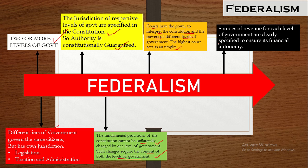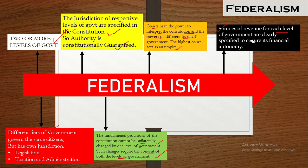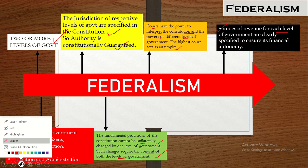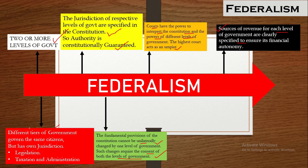Moving to a very important point: the sources of revenue for each level of government are clearly specified to ensure their financial autonomy. No government can stop the financial resources of or command the other government. The sources of revenue for each level of government are clearly specified to ensure financial autonomy.